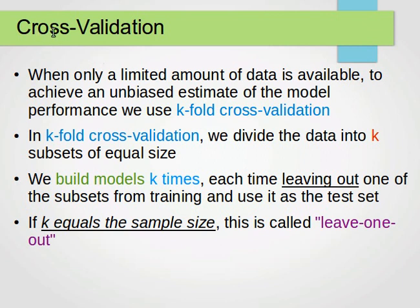The other method is cross-validation. When only a limited amount of data is available, to achieve an unbiased estimate of the model performance we use k-fold cross-validation. We divide the data into k subsets of equal size. We build models k times, each time leaving out one of the subsets from training and use it as the test set.